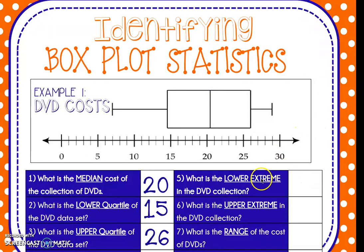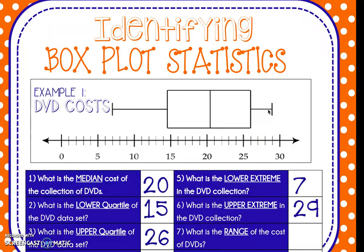Number five says: what is the lower extreme, or the minimum cost for a DVD? The minimum cost is $7. The upper extreme is our maximum cost — it's our most expensive and it's $29. On the first day of our statistical calculations, we learned to calculate range, which is the maximum minus the minimum. So to calculate range, we do 29 minus 7 and we get that the range of the DVD cost is $22.